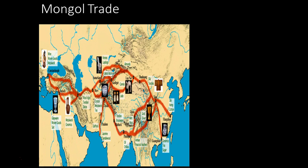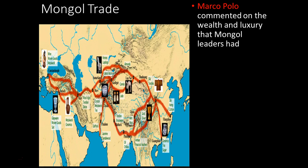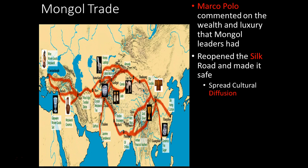The Mongols are famous for their ability to control the Silk Road. Marco Polo comments on all the luxury goods they honed in on. It was said you could walk with gold over your head on the Silk Road — not one road but a network — and be untouched because the Mongols punish thievery to the extreme. The Silk Road being open spreads cultural diffusion, but also spreads the bubonic plague, so there are positives and negatives.